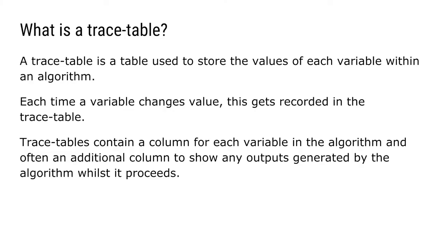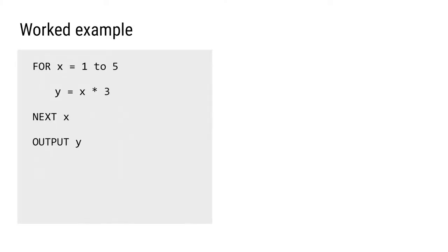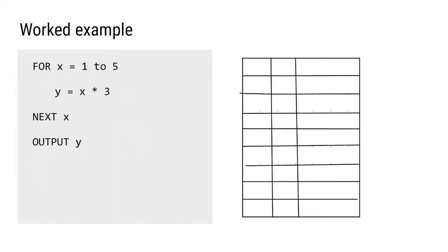So let me show you how this works with a few examples. The basic rule when setting out a trace table is to use a column for each variable in the algorithm and another column for the output that the algorithm is going to generate. So in this algorithm we've got three variables: x, y, and an output. So we're going to need three columns in our trace table with headers x, y, and output. Then we just work through the algorithm, writing down the value of the variables as they change line by line.